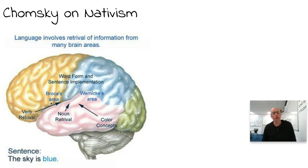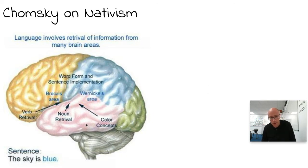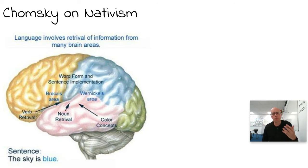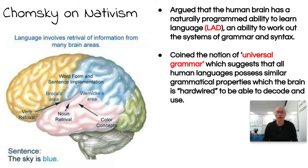Looking at the human brain, different parts have different linguistic zones responsible for different things. You've got Broca's area and Wernicke's area — part of the brain responsible for word forms and sentence implementation. The brain is broken down into different areas: some deal with color concepts, some with verbs, some with nouns. Chomsky argues that the brain is very complicated and language involves retrieval of information from many different parts of it.